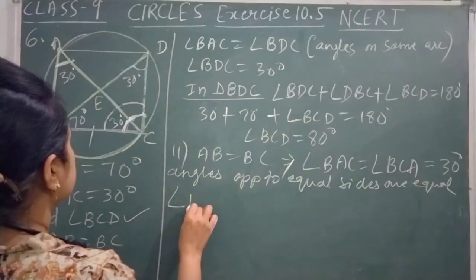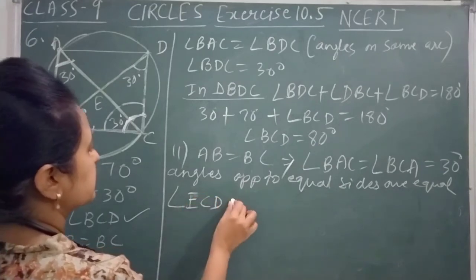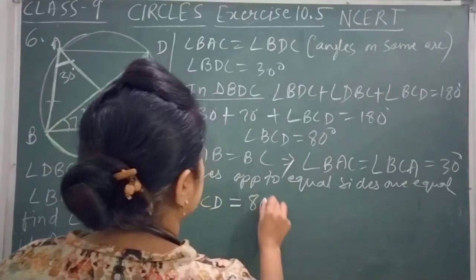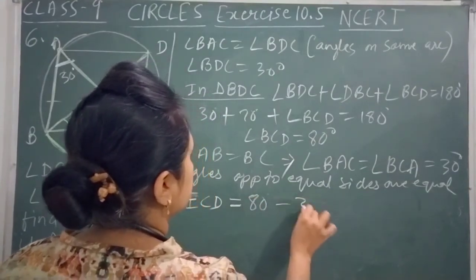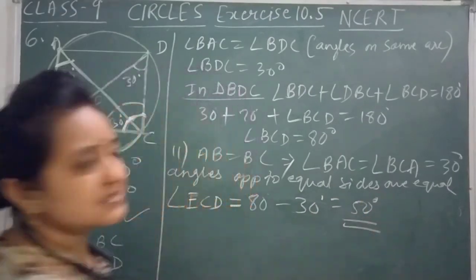So angle ECD is equal to 80 minus 30, and that is equal to 50 degrees. This is the answer.